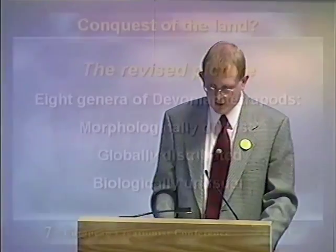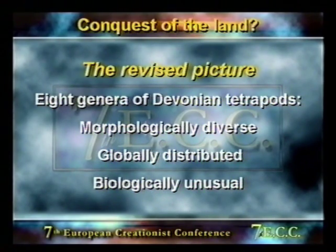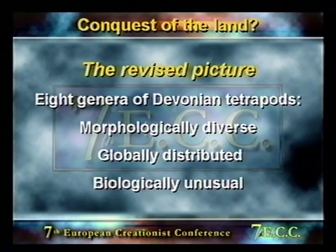Since Carroll wrote his textbook, our knowledge of Devonian tetrapods has greatly expanded and led to a major re-evaluation. We now have eight known genera of Devonian tetrapods, and not only are there eight genera, but they are morphologically diverse — very different in appearance.